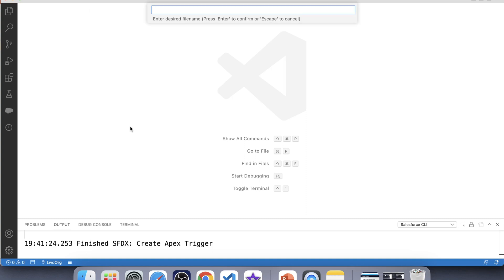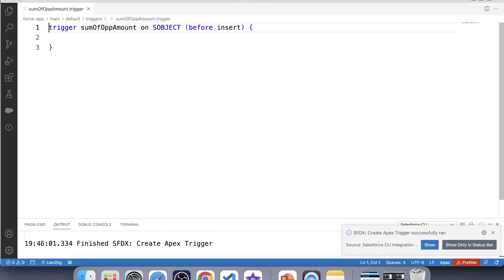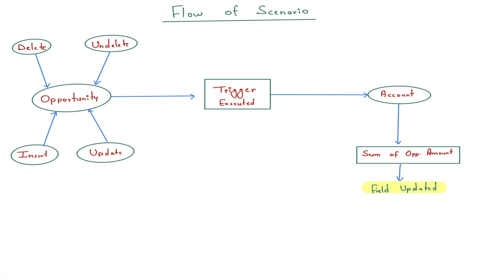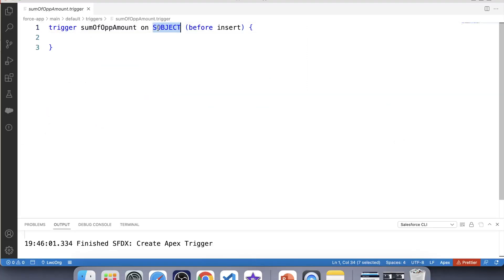Now let's create a trigger named SumOfOPPAmount. Again, the question is: on which object should we write this trigger — on Account or on Opportunity? We need to see which object causes the trigger to execute. In this scenario, whenever we insert, delete, or undelete an opportunity record, or whenever we update the amount of an opportunity record, our trigger will be executed. The TotalOPPAmount field on the account object will then be updated automatically. Since the change is happening on the Opportunity object, our trigger will be on the Opportunity object, as it is the source that starts the trigger.